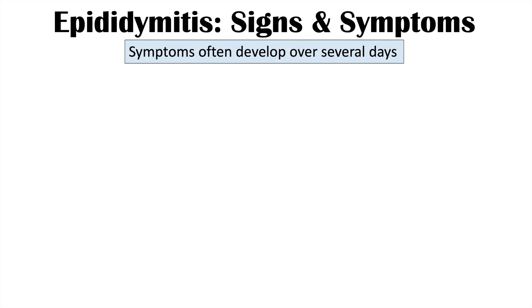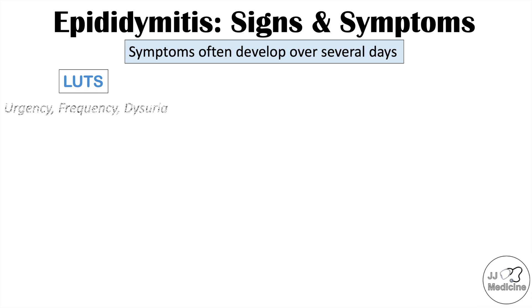The symptoms of epididymitis often develop over several days, in contrast to testicular torsion — an important distinction. Signs and symptoms include lower urinary tract symptoms (LUTS): urinary urgency, increased urinary frequency even with low urine volume, and dysuria, which is a burning sensation when urinating.